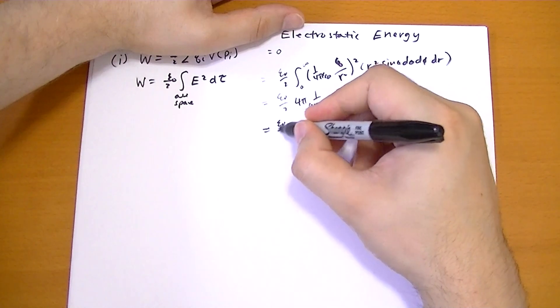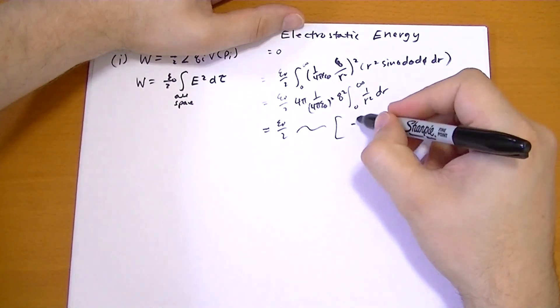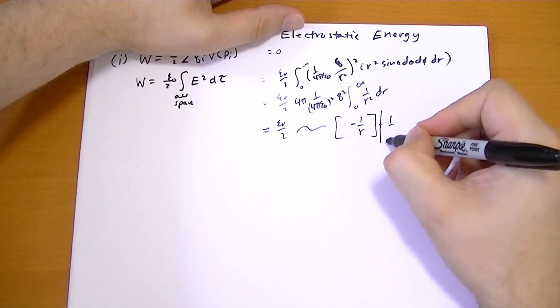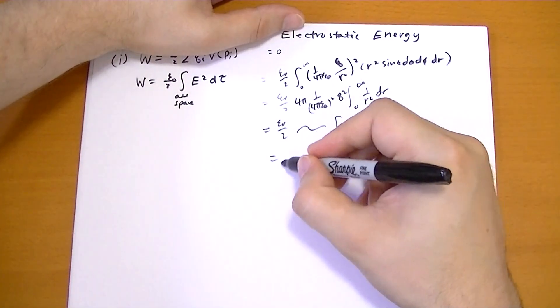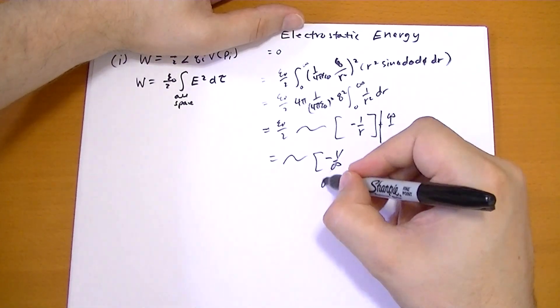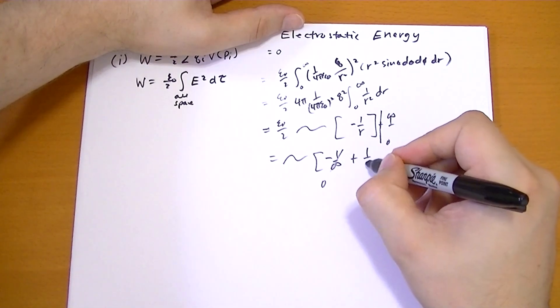So that equals gobbledygook times minus 1 over r, plus 1 evaluated between 0 and infinity, which equals gobbledygook times minus 1 over infinity, which is 0, plus 1 over 0.